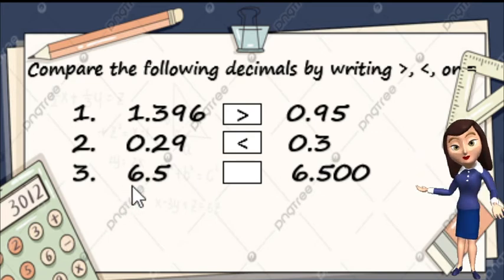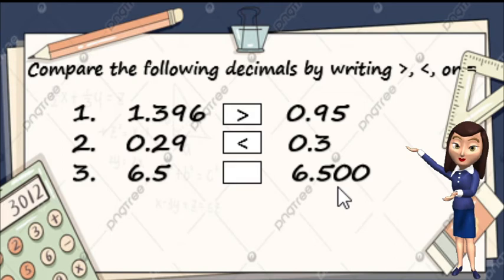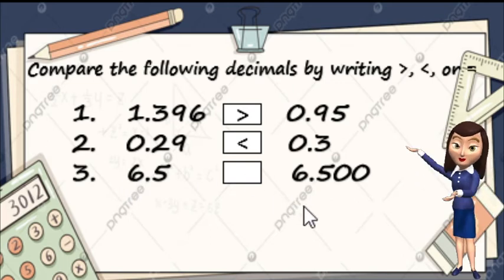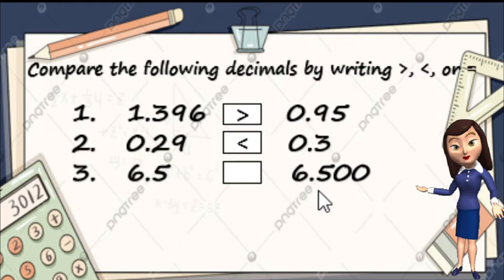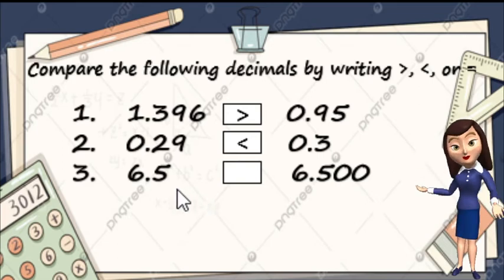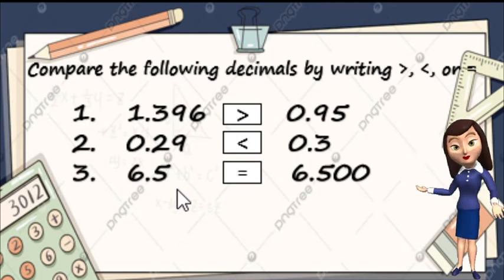Next, number 3: we have 6 and 5 tenths and 6 and 500 thousandths. So pareha siya ng whole number — 6. Next natin is yung tenths place: 5 versus 5. So yung sumunod na digits natin ay 0 at wala na. So ibig sabihin, parehas lang siya ng value. So 6 and 5 tenths is equal to 6 and 500 thousandths.